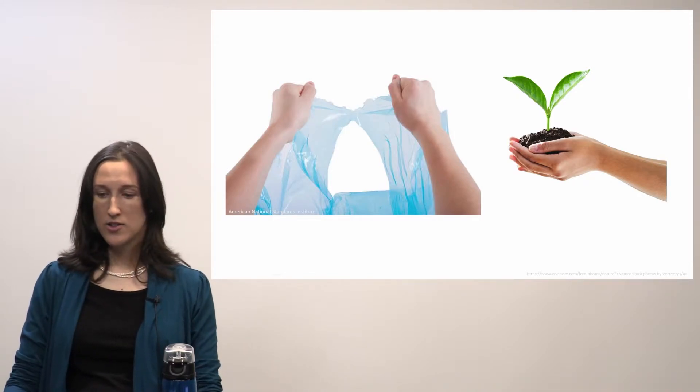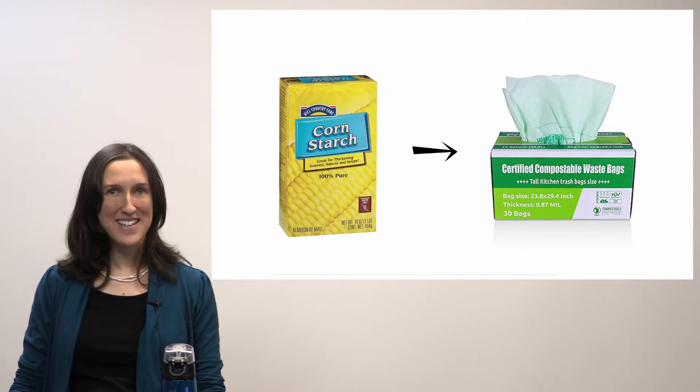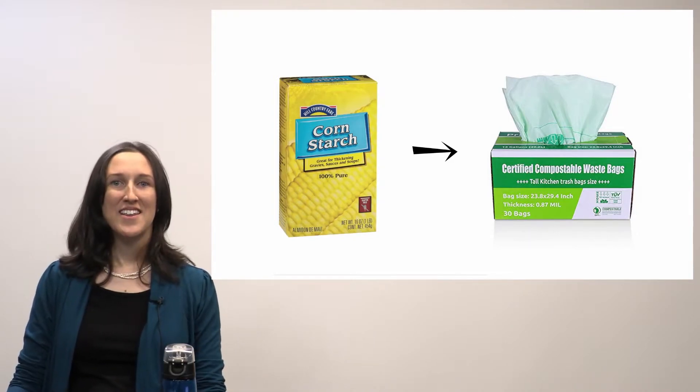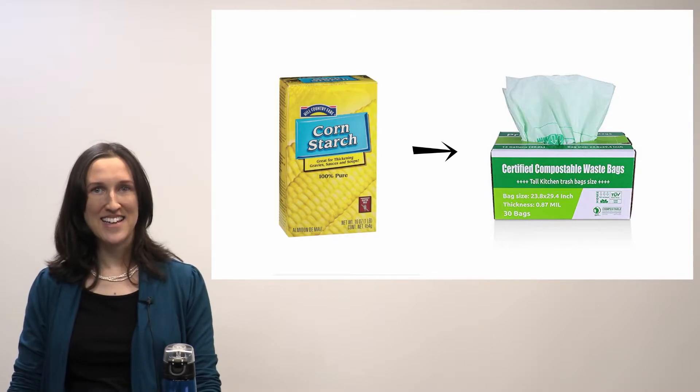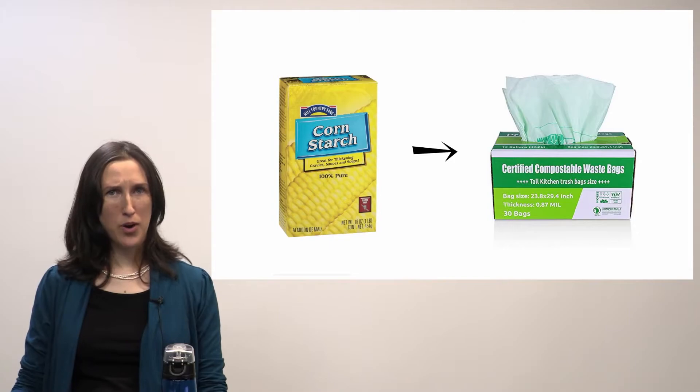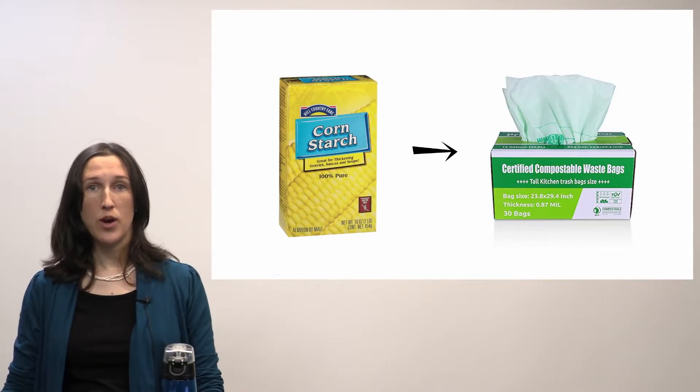So you may have noticed there are already biodegradable bags out there. These are made from cornstarch. The problem with using cornstarch to make our compostable bags is that corn is a source of food, and so we're going to run into problems in the long run if we start making our plastics out of things that we also eat.